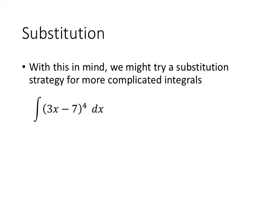So with that in mind, when we encounter a more complicated-looking integral, like this one, the integral of the quantity 3x minus 7 to the fourth, we might have an idea about how to approach this using substitution. Our idea might be to create a new variable, maybe we'll call it u, and set u equal to 3x minus 7.